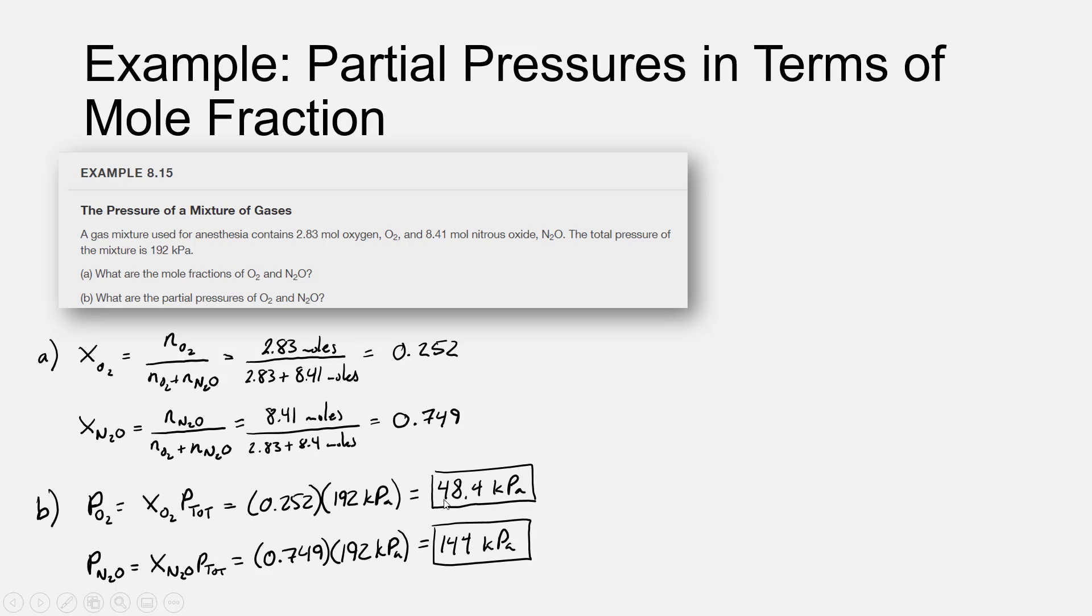48.4 plus 144 is just over 192 kilopascals. That comes from rounding this pressure to 3 sig figs, so it looks like our answer checks out.